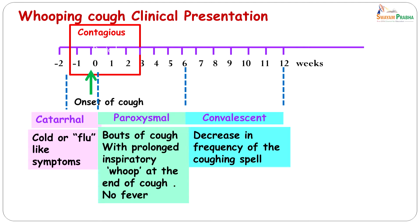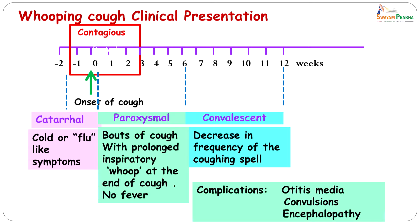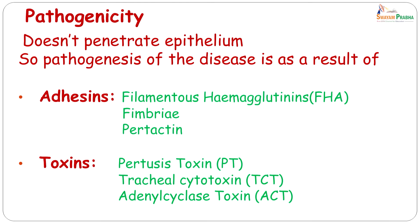The paroxysmal stage is very important because this is the stage where complications occur. Besides subconjunctival hemorrhages, you can get otitis media, convulsions, or encephalopathy. The organism does not penetrate the epithelium, so the pathogenesis of the disease is a result of adhesins and toxins. The adhesins consist of filamentous hemagglutinin, fimbriae, and pertactin, and the toxins are the pertussis toxin, the tracheal cytotoxin, and the adenylate cyclase toxin.